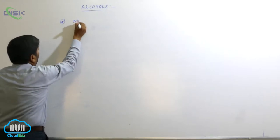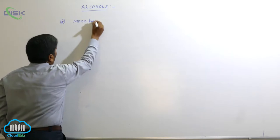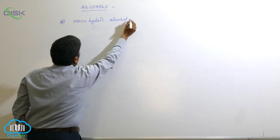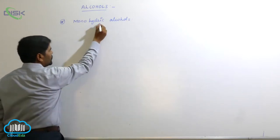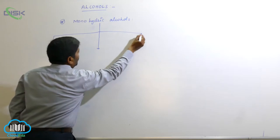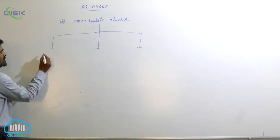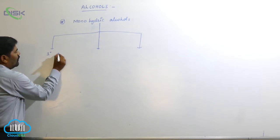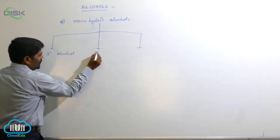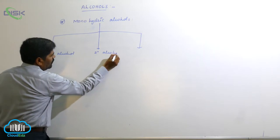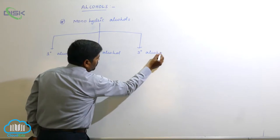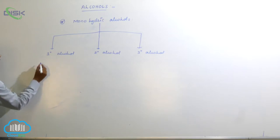Monohydric alcohols are divided into three types based on the nature of the carbon attached to the hydroxyl group. The first one is primary alcohol, the second one is secondary alcohol, and the third one is tertiary alcohol.